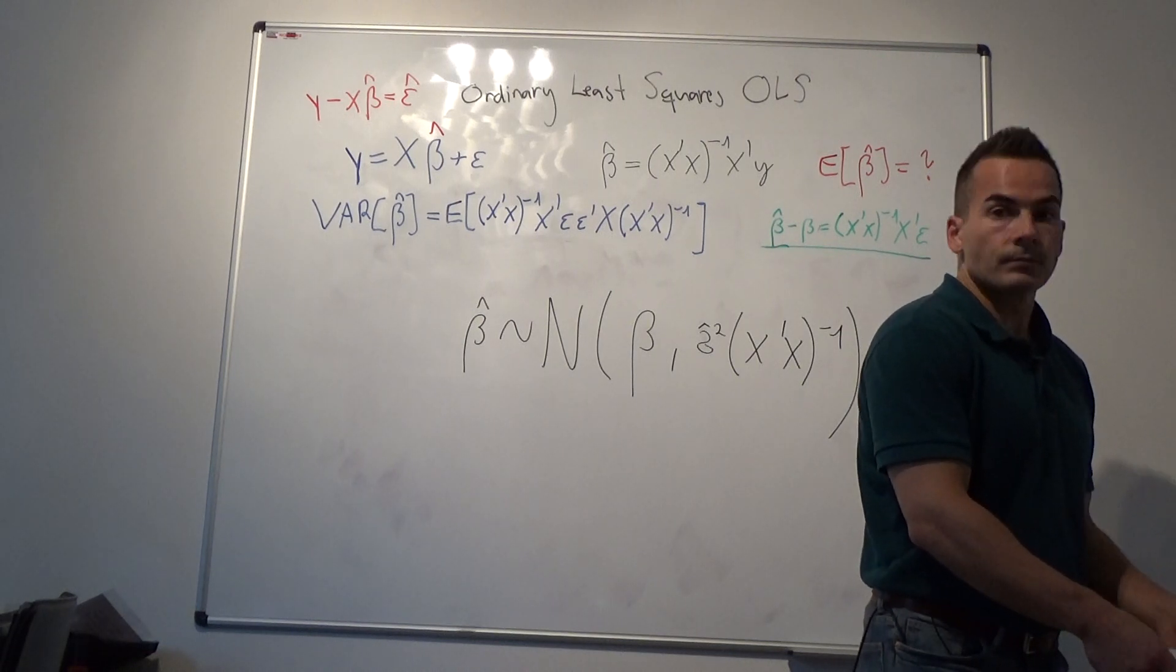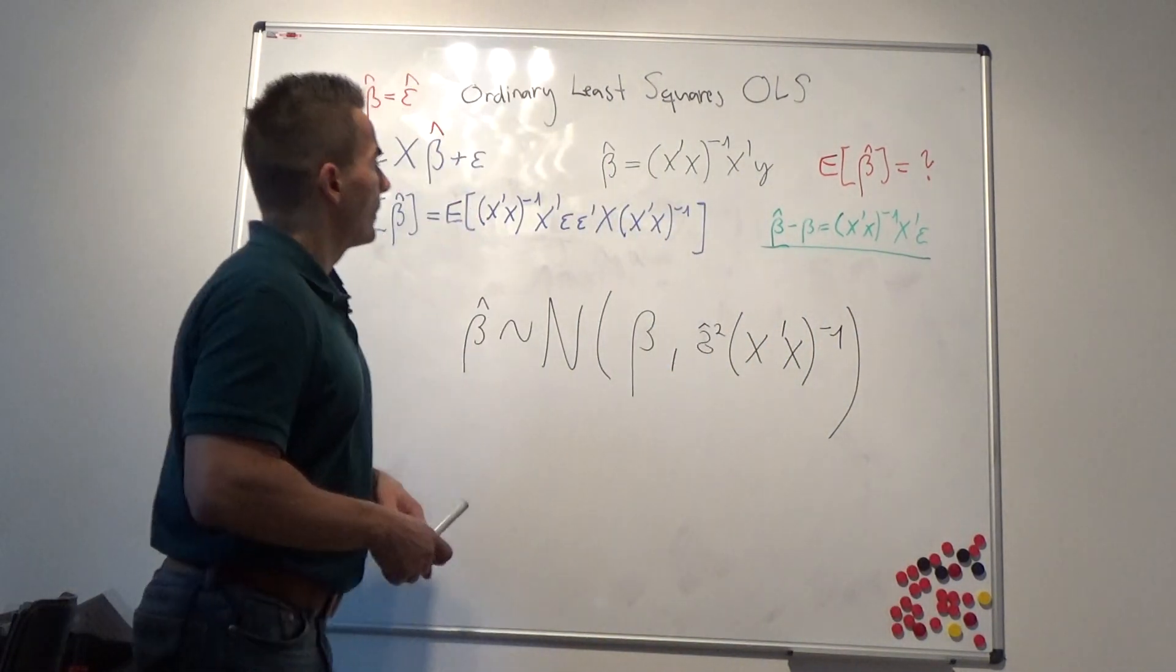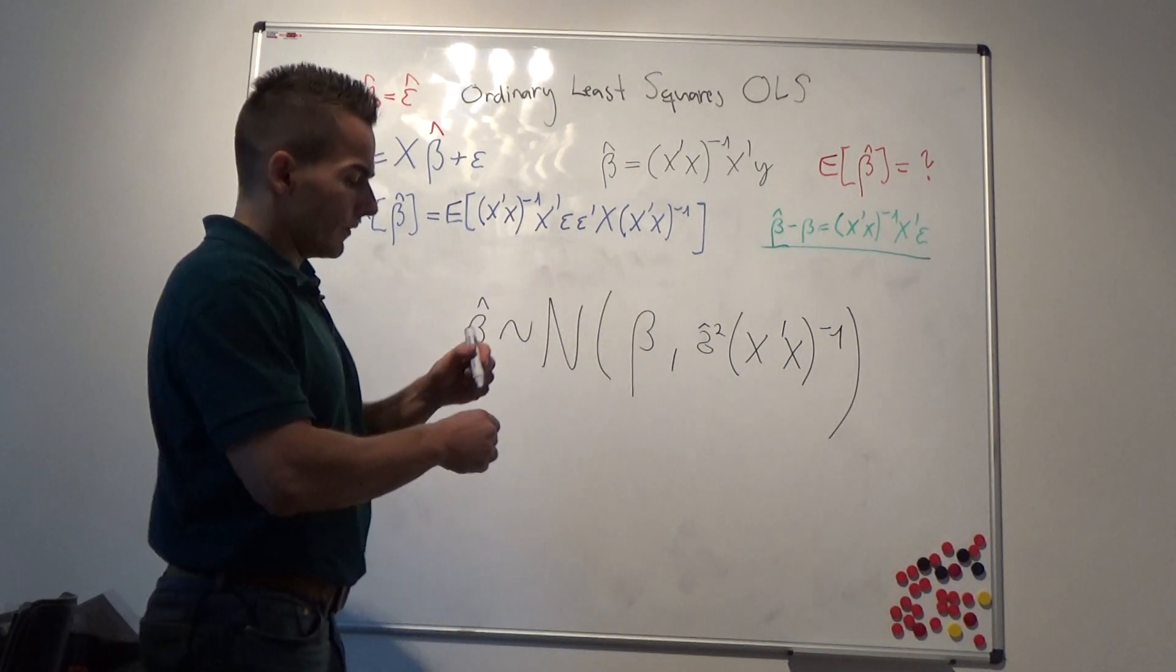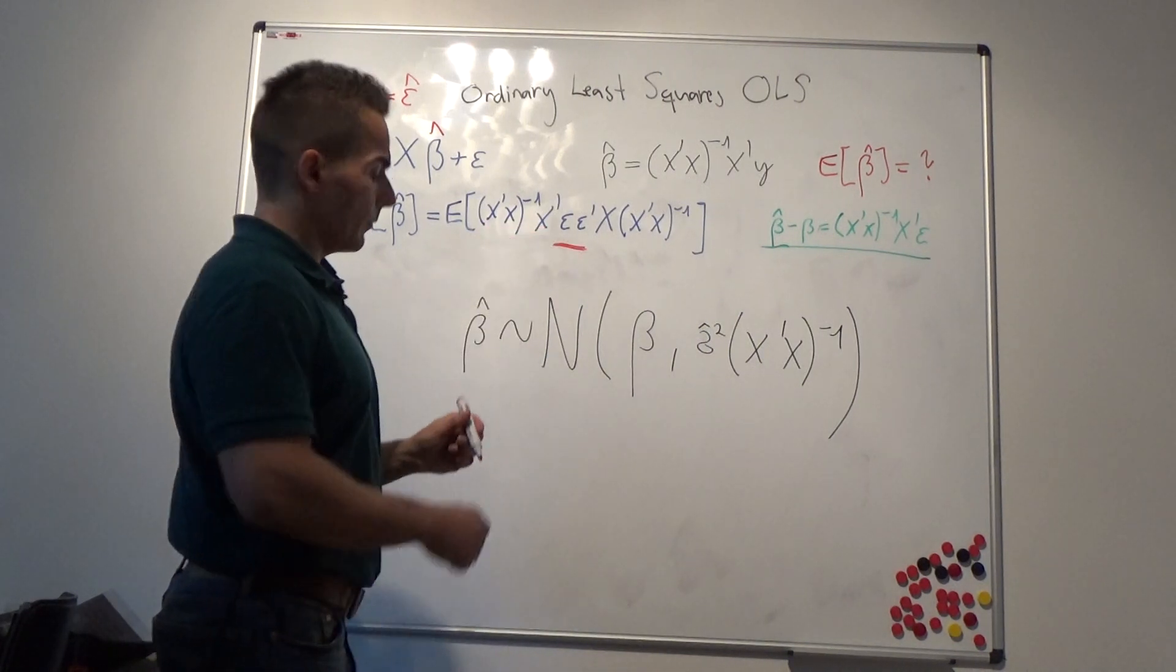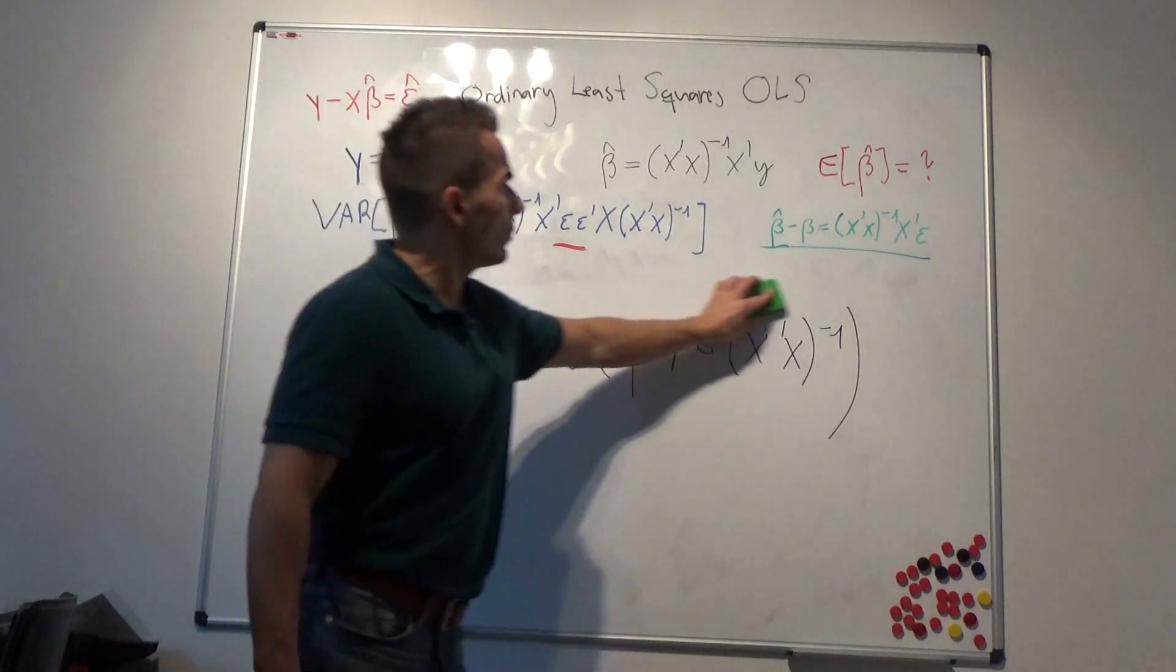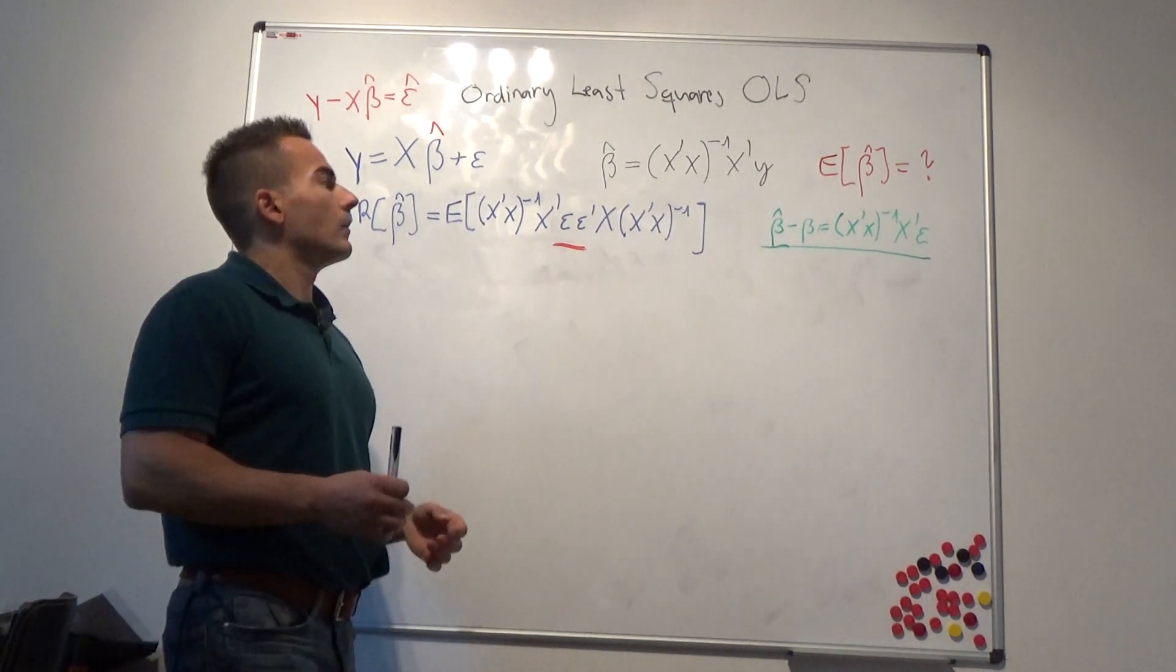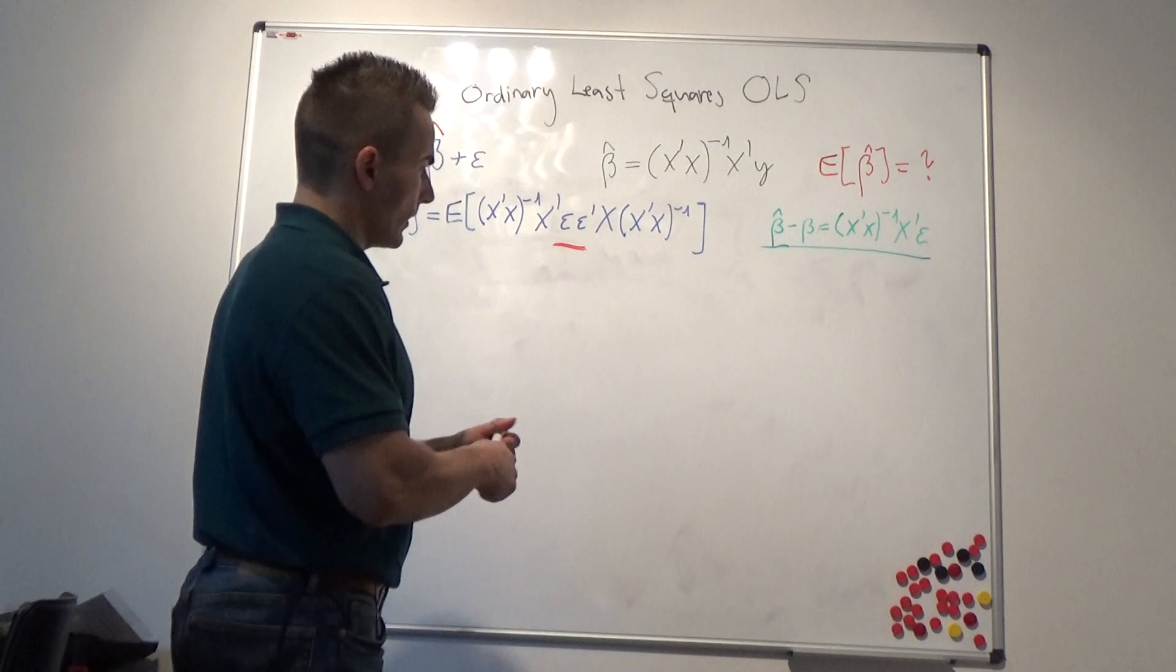Another thing that is now important to note is we know that this guy here in this equation is epsilon times epsilon prime. This somewhat catches the variance of our residuals. We said already earlier that our residuals need to follow a certain distribution.